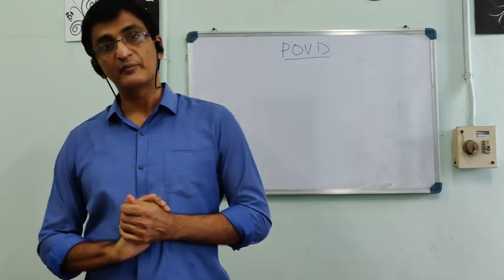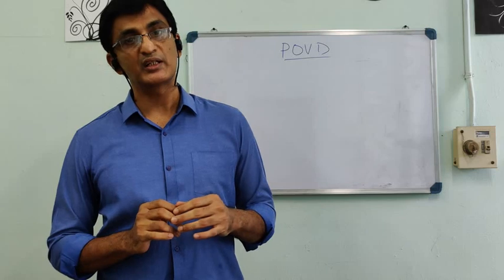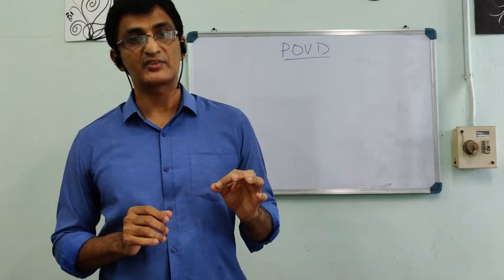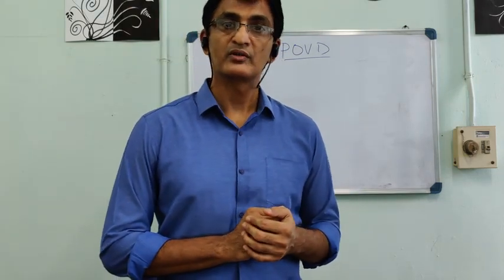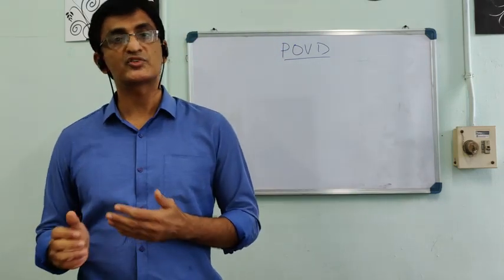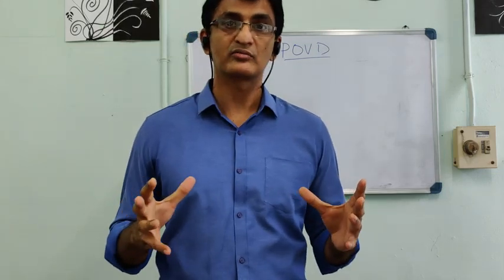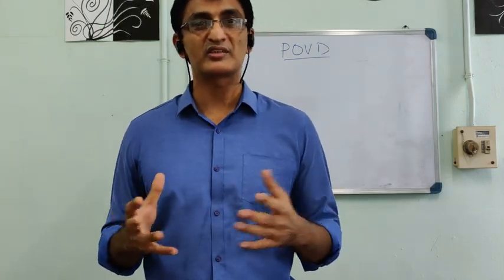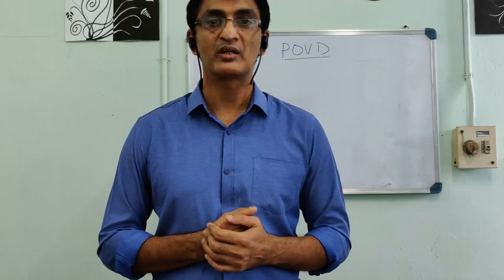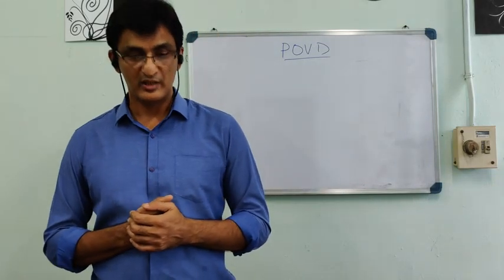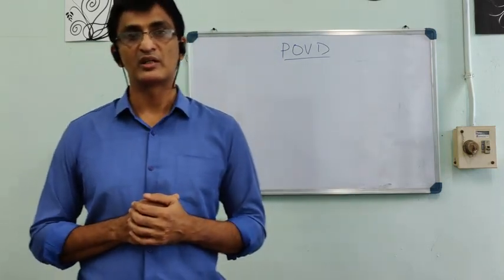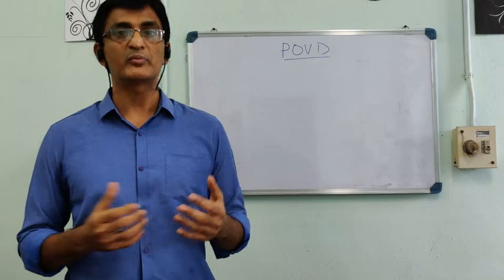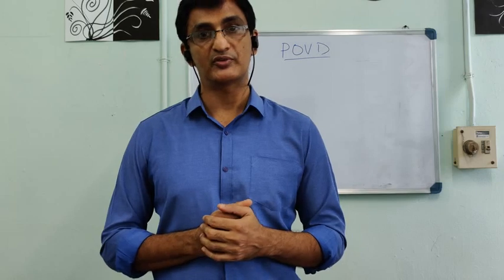The posterior tibial artery is palpated on the medial aspect, midway between the medial malleolus and the calcaneal bone. Palpate both sides for comparison. The anterior tibial artery is palpated midway between the medial and lateral borders against the lower end of the tibia, just proximal to the ankle joint line. It is a difficult artery to palpate in normal individuals, so practice is needed.